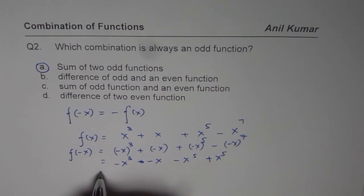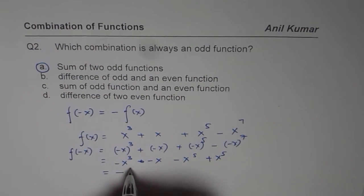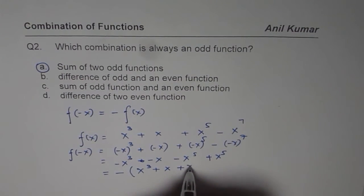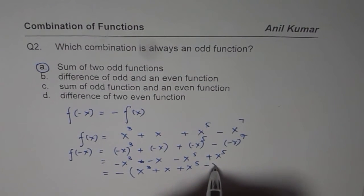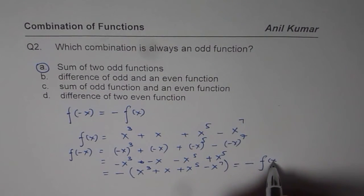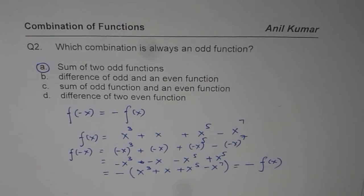Now I can take minus common. So if I take minus common, I get x cube plus x plus x to the power of 5 minus x to the power of 7, which is the same as minus of f of x, so this function is odd.